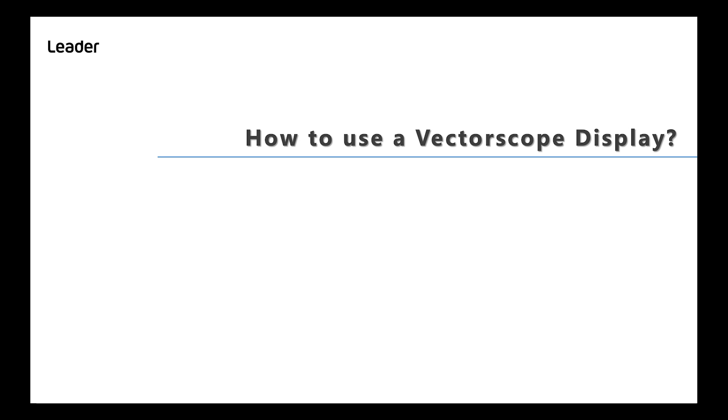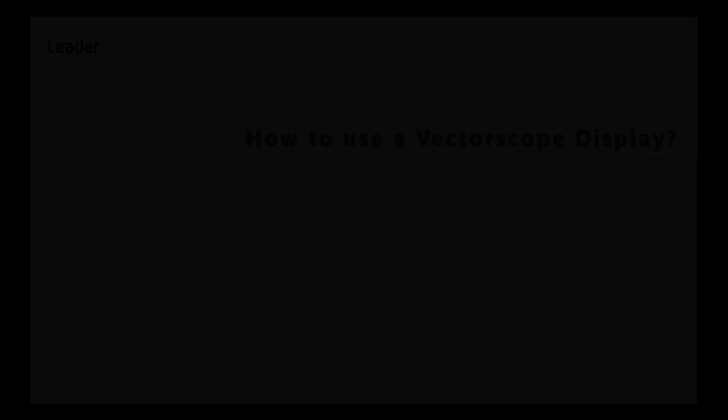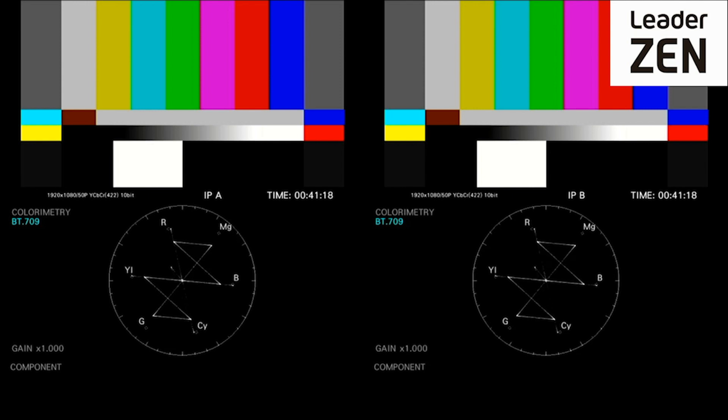So how do we use a vectorscope display for television and film production? Well, the most obvious is color matching cameras to ensure that they are both set up identically.